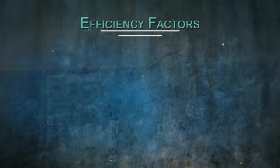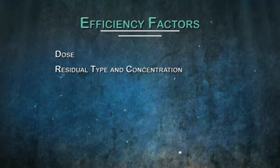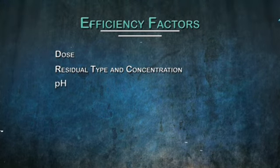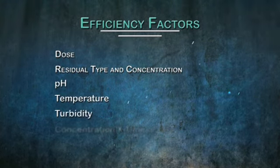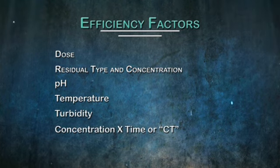There are several factors that affect the efficiency of disinfection. These factors include the dose, residual type and concentration, pH, temperature, turbidity, and concentration X time, or CT. In general, the highest levels of pathogen inactivation are achieved with high chlorine residuals, long contact times, high water temperature and good mixing, low pH, low turbidity, and the absence of interfering substances.